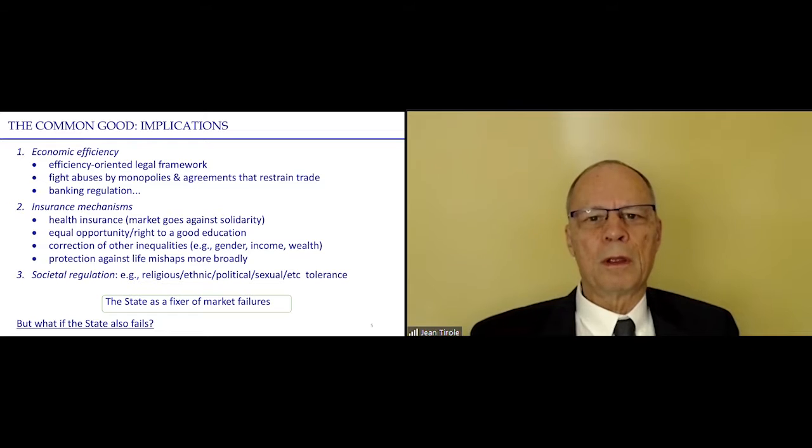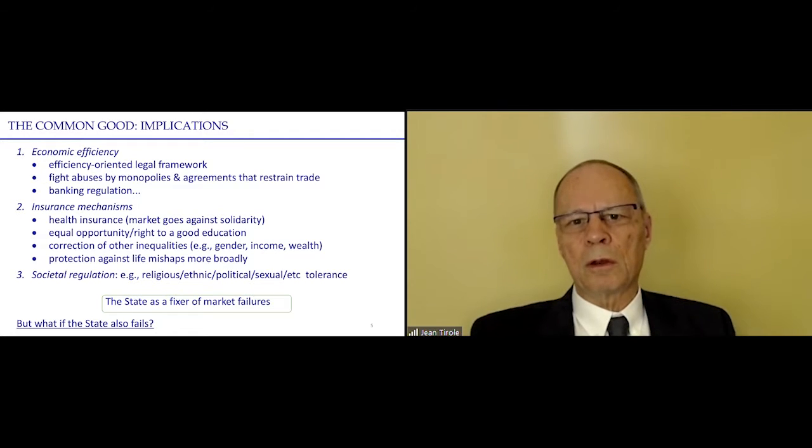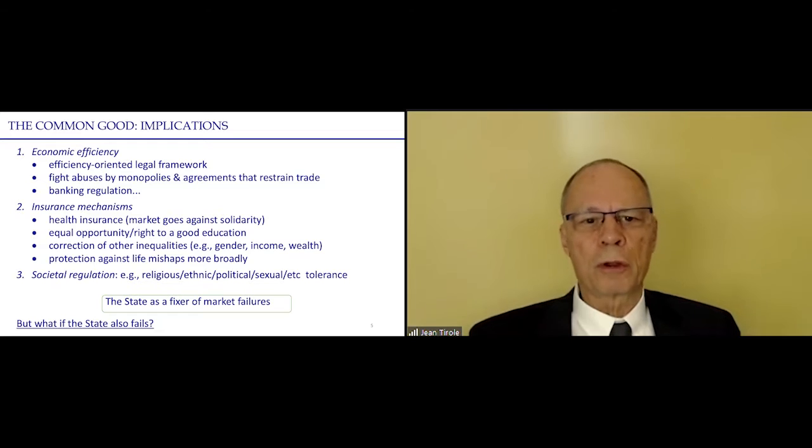We want to have health insurance. You can be born with bad health or good health, and you don't know in advance. So you need insurance against bad health. We need to correct other inequalities, like gender inequality, like income inequality. We need protection against life mishaps more generally. And finally, we need societal regulation. We need tolerance. Tolerance because you don't know when you are born which religion you want to adopt or no religion at all, your ethnicity, your sexual orientation, against everything. We want tolerance.